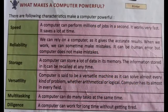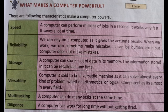What makes a computer powerful? The following characteristics make a computer powerful. First is speed — a computer can perform millions of jobs in a second. It works very fast and saves a lot of time. Second is reliability — we can rely on a computer as it gives accurate results. When humans work, they can sometimes make mistakes, but the computer does not make mistakes.